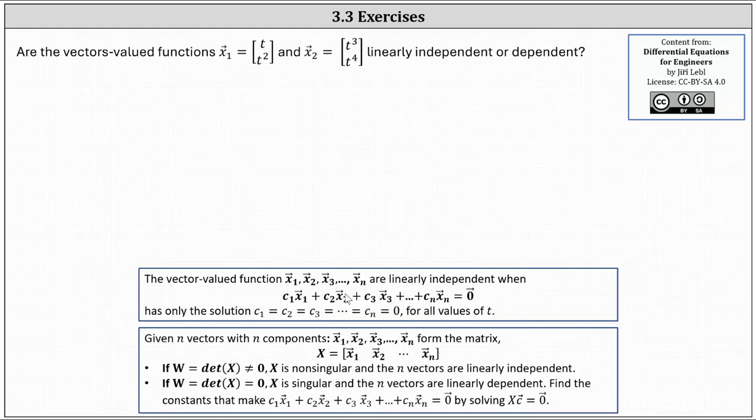Using this definition, we would consider the vector equation c1 times x1 plus c2 times x2 equals the zero vector. From here, if we write the corresponding system of equations, we have c1t plus c2t cubed equals zero and c1t squared plus c2t to the fourth equals zero.